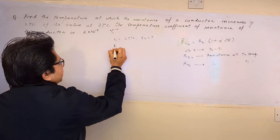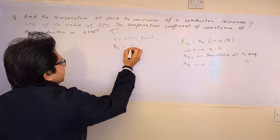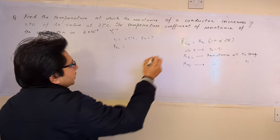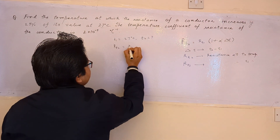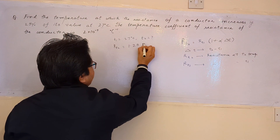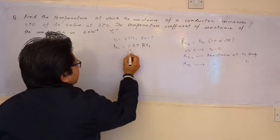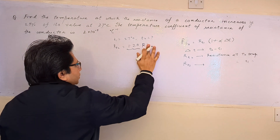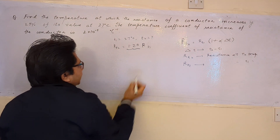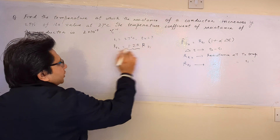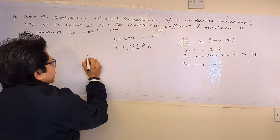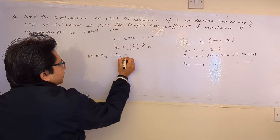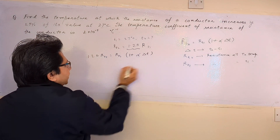According to the given condition, R_T2 is R_T1 plus 25 percent of R_T1, which means R_T2 is 1.25 times R_T1, since the value increases by 25 percent. We substitute this into the formula: 1.25 R_T1 equals R_T1 bracket 1 plus alpha delta T.